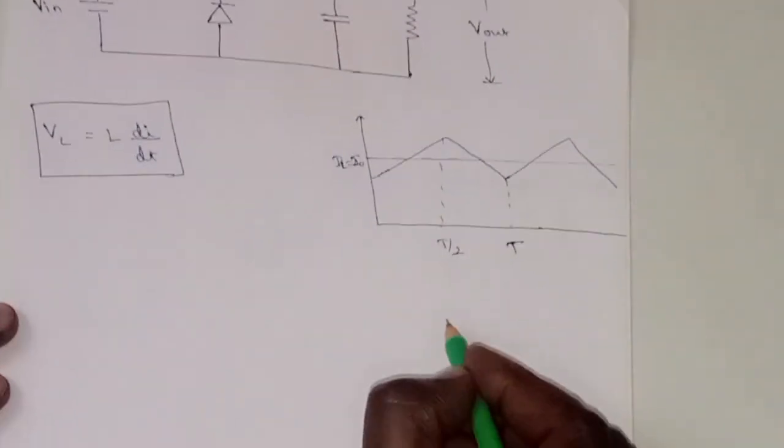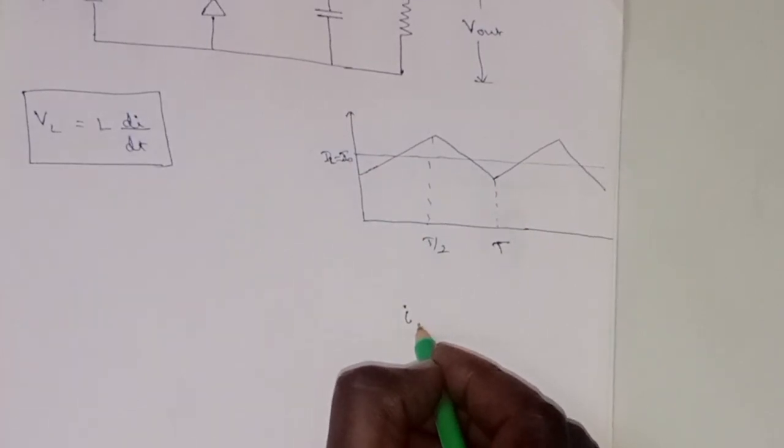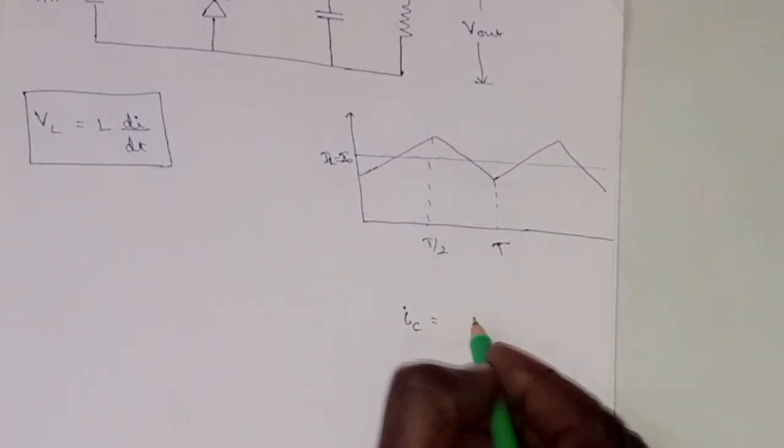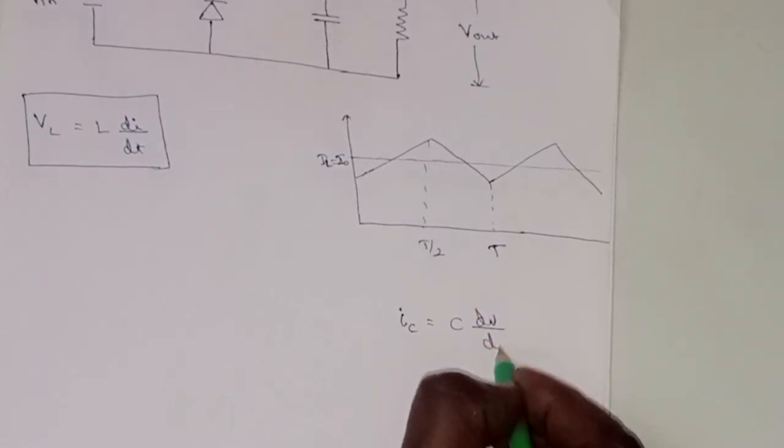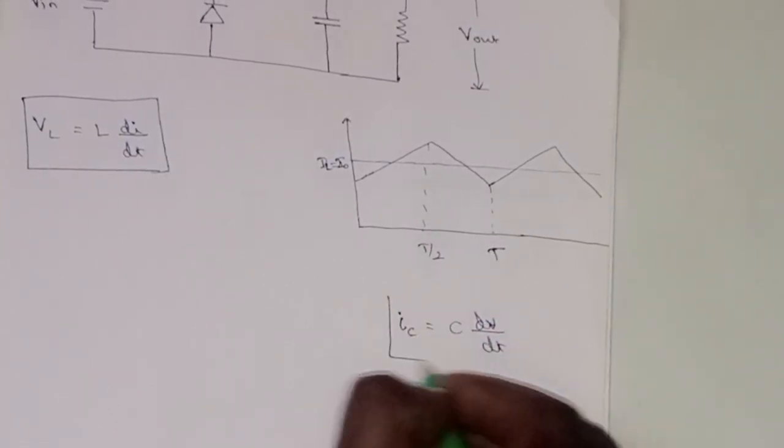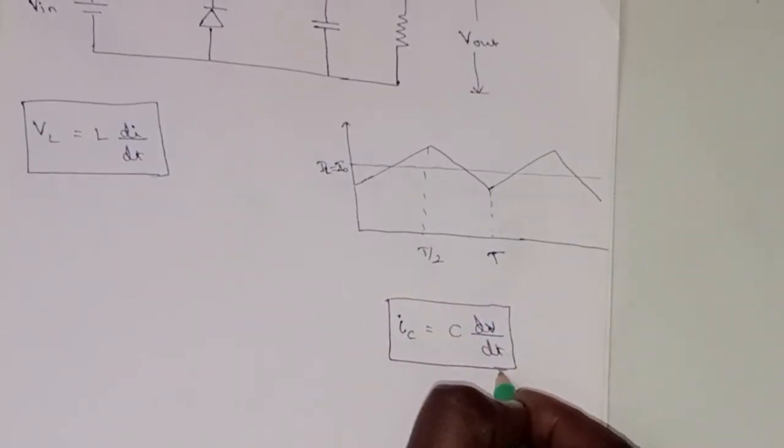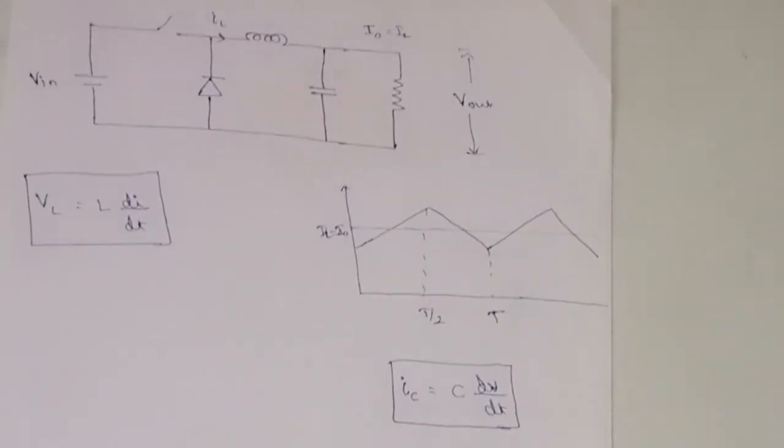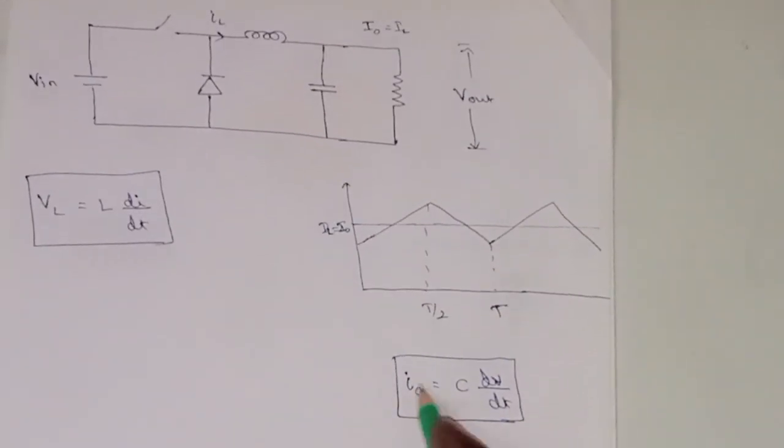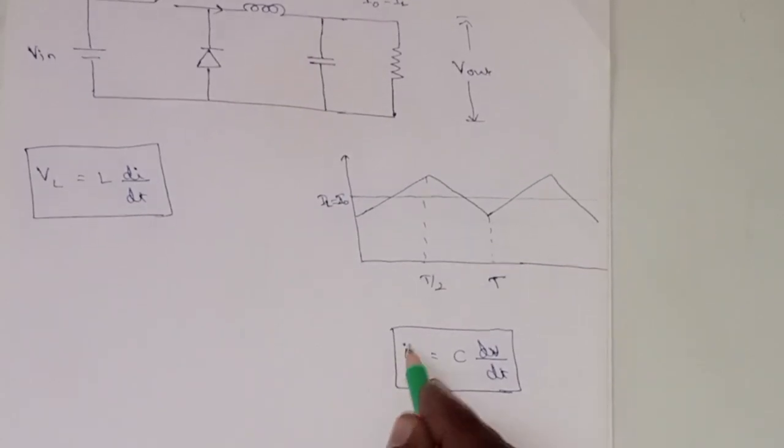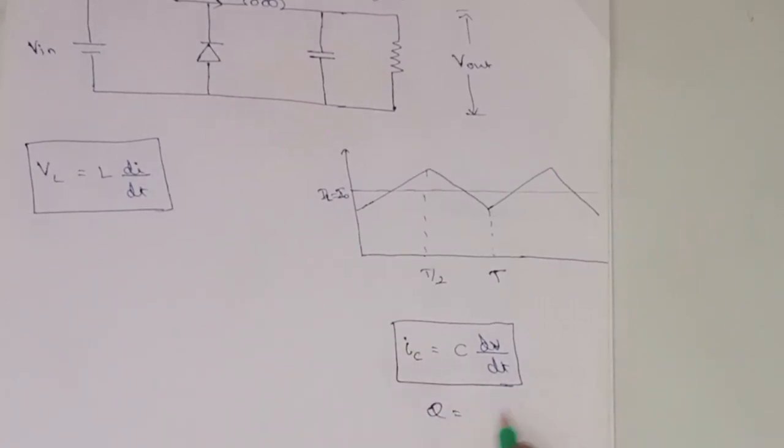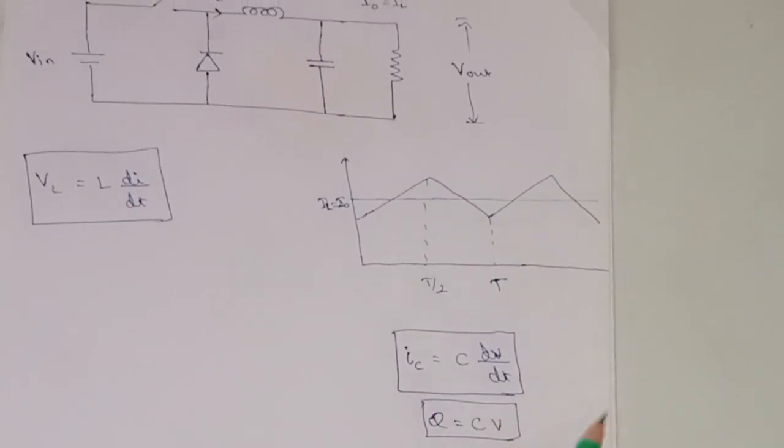And for capacitors, you know one more formula: the current flows through the capacitor, Ic, is equal to C into dV by dt. So it has to be in your mind always, so that we can derive it easily. Also, we can say it the same way - Ic is current flows through the capacitor, charge, and C into V. This is also the same form, one and the same, both are.